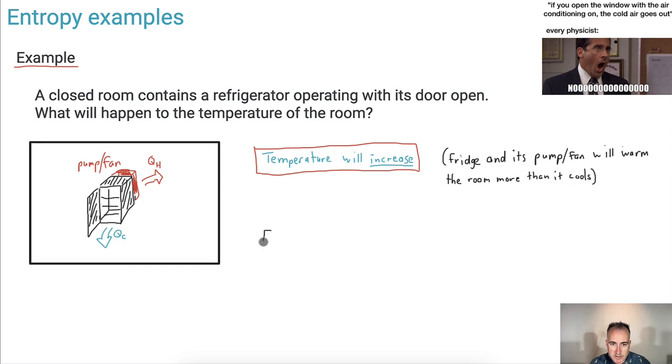We can look at this from the entropy point of view as well. What does entropy have to say about it? Although entropy can decrease locally, the fan and the pump increase the entropy in the room more. That means overall delta S goes up, the entropy goes up. So that's another way to see it, just using entropy.